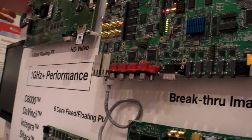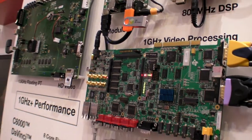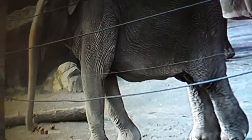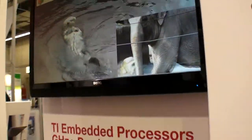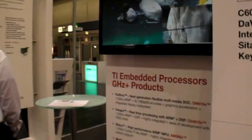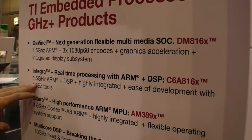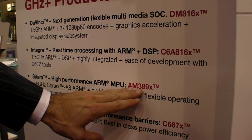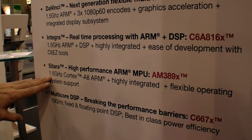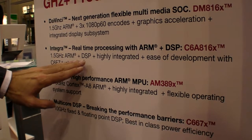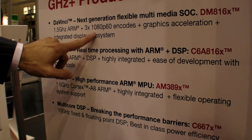Here we have another one which is breakthrough imaging. Because we are having not only the encode and decode, but we also have imaging. Looking here, it's a very smooth image — the wires have a very low-angle interleave interpolation that makes all the lines very smooth. That's what we're calling breakthrough in imaging. The product lineup includes the C6A816 Integra at 1.5 GHz plus DSP, and the AM389, which is the same Cortex-A8 as on the OMAP, all running at 1.5 GHz. Citara is just Cortex; Integra is Cortex plus DSP; DaVinci is ARM plus DSP, and we are adding the 3x 1080p60.